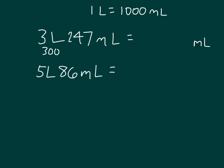So if I'm renaming it, I'm taking 3,000 milliliters that I renamed the three liters from, and I'm putting it together or adding it with the 247 milliliters to get 3,247 milliliters.